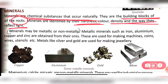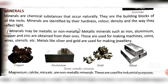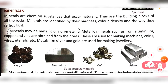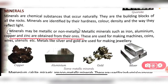We can classify minerals mainly in two ways: metallic and non-metallic. Among metallic minerals - those which are actual metals - iron, aluminium, copper, and zinc are all obtained from their ores. Ores are the rocks from which metallic minerals can be extracted.